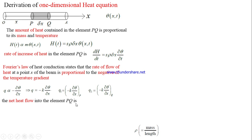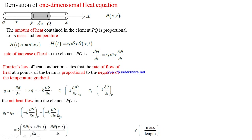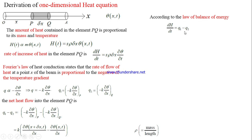The net heat flow into element PQ is q1 minus q2. Substituting q1 and q2, and taking k common, this gives k times [∂θ/∂x at (x+Δx, t) minus ∂θ/∂x at (x, t)]. According to the law of conservation of energy, the rate of increase of heat in element PQ equals the net heat flow into it, so dH/dt = q1 − q2.